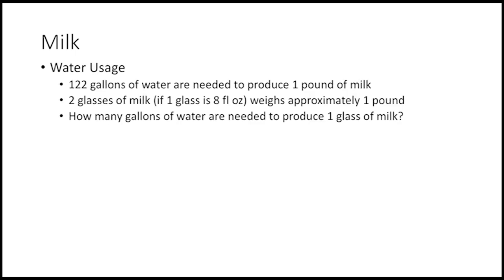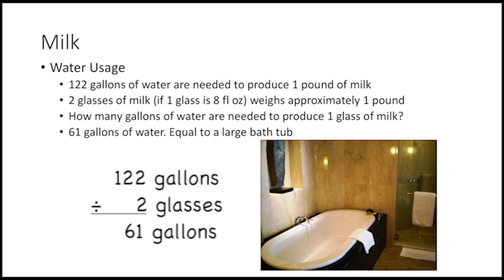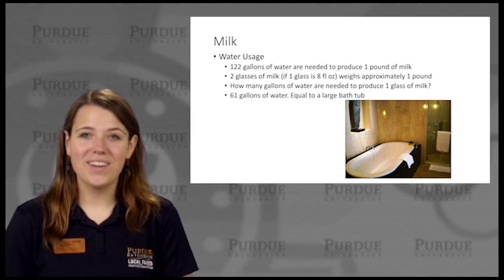Now let's talk about your glass of milk. 122 gallons of water are needed to produce one pound of milk. Two glasses of milk, if one glass is eight fluid ounces, weighs about one pound. How many gallons of water are needed to produce one glass of milk? 61 gallons of water — that's about the same as a large bathtub. That's quite a bit of water.